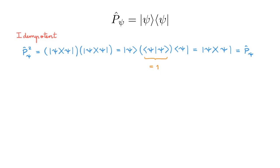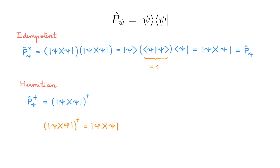In fact, idempotency is a defining property of a projection operator — any operator whose square is equal to itself is a projection operator. The second property of the projection operator is that it is Hermitian. To see this, let's consider the adjoint of the projection operator, which we can write as the adjoint of the outer product. Remember from the video on operators that the adjoint of an outer product simply reverses the order. So in our case we get this, and it is simply the projection operator itself.